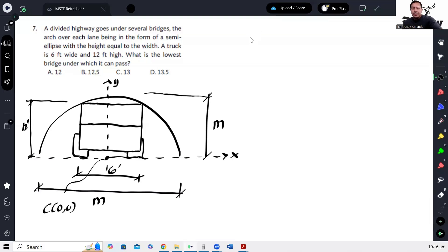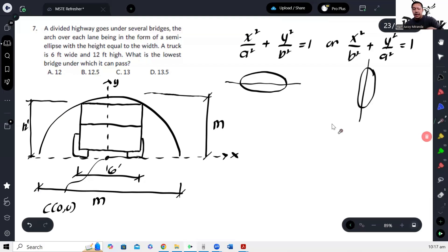The equation of an ellipse is either x squared over a squared plus y squared over b squared equals 1, or x squared over b squared plus y squared over a squared equals 1. It depends on where the major axis is. If the major axis is horizontal like this, then a is under x. But if the ellipse is like this with the major axis on y, then a is under y. So here we need to identify which is the major axis and which is the minor axis.